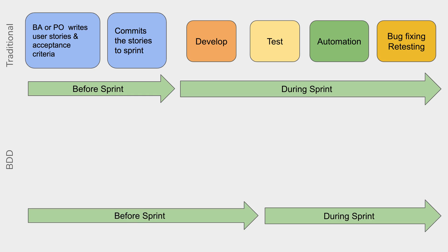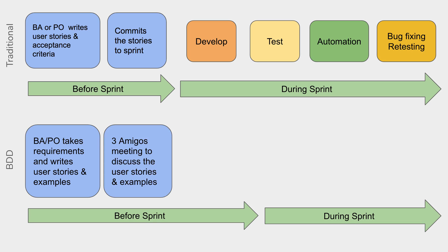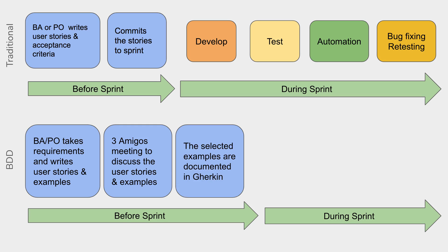When we talk about BDD, again there are activities before the Sprint and some during the Sprint. It starts with the same stage where a BA or PO takes the requirements, writes user stories and some examples. After this, we have the three amigos meeting where these examples and user stories are discussed, explored, and agreed upon. The agreed examples are then documented using a specification language like Gherkin, so that these documented examples work as a single source of truth for all teams.